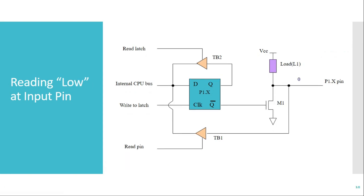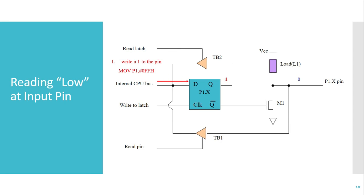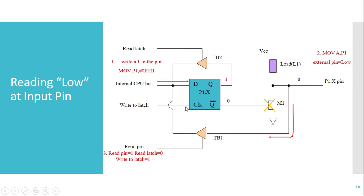Whenever we want to read an input pin and the input signal is low, we again first make the pin an input by sending FFh to that port or individual pin. With that, the transistor is off. The low signal present on the pin is given to the tri-state buffer. The same control signals apply: read pin buffer is on, read latch buffer is off, and write to latch is high. The low signal is sent to the internal CPU bus and stored in the latch. This is how the internal structure of a port pin works.